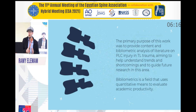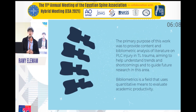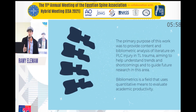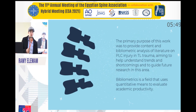So, what is bibliometric analysis? To put it simply, it is a field that uses quantitative means to evaluate academic productivity. It uses large databases that provide data on hundreds of thousands of papers, which can be summarized into a simple CSV format and used to analyze huge amounts of data to find the citation factor and impact factor of different authors and publications.